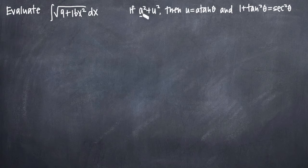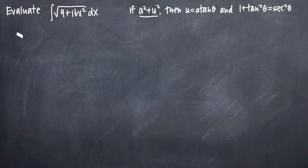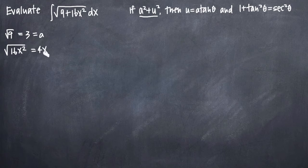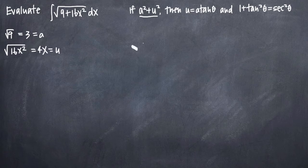Once we identify the form that we have — in this case the constant term plus the variable term — we need to identify a and u. The square root of 9 is 3, so a equals 3. The square root of 16x squared is 4x, so u equals 4x. Now we can plug them into our substitution u equals a tangent of theta, and we'll get 4x equals 3 times tangent of theta.